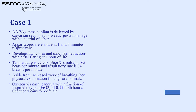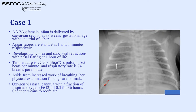Case 1: A 3.2 kg infant at 38 weeks with Apgar scores of 9 and 9 at 1 and 5 minutes developed tachypnea and subcostal retraction. Temperature 36.6°C, pulse 165, respiratory rate 74. Aside from increased work of breathing, physical examination was normal. Oxygen via nasal cannula at FiO2 0.3 was given for 36 hours, then weaned to room air. Based on history and X-ray, this is easily identified as transient tachypnea of the newborn.